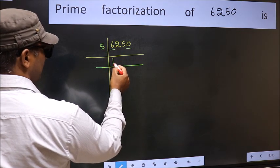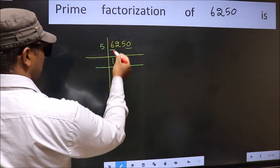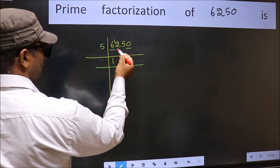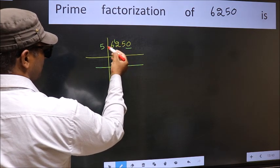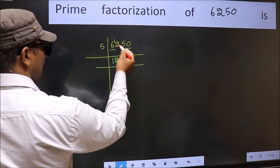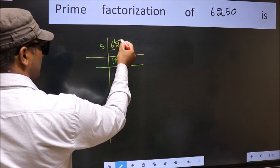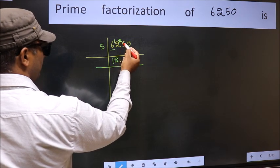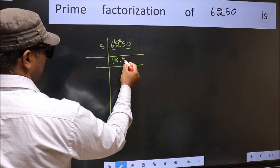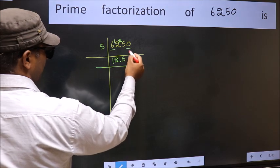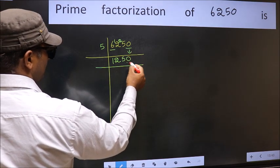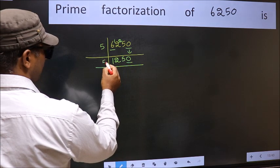A number close to 6 in the 5 table is 5×1=5. 6 minus 5 is 1, carried forward. 12 — a number close to 12 in the 5 table is 5×2=10. 12 minus 10 is 2, carried forward. 25 — we get 25 in the 5 table from 5×5=25. Bring the 0 down.